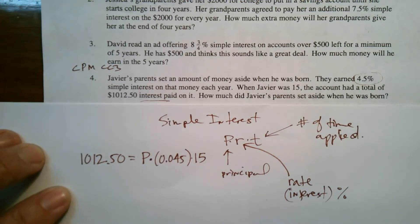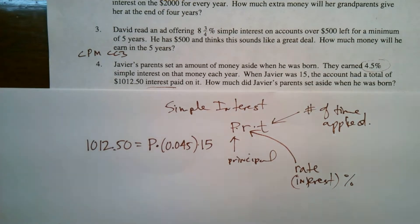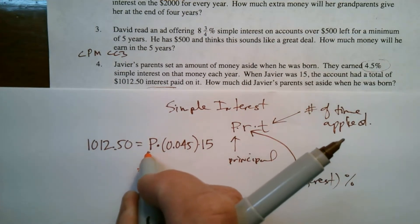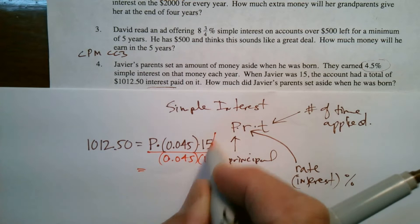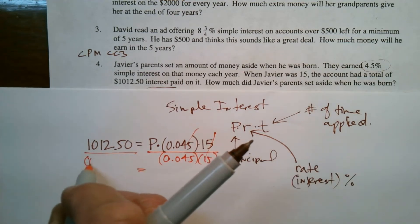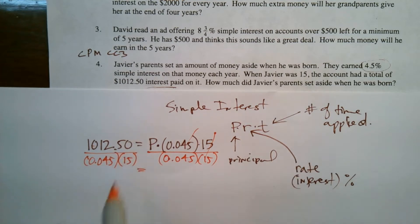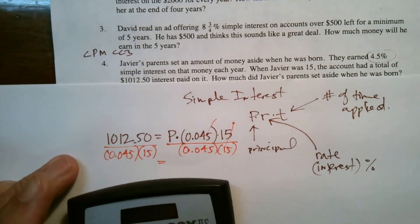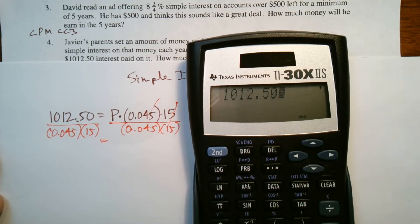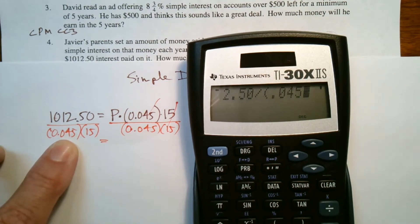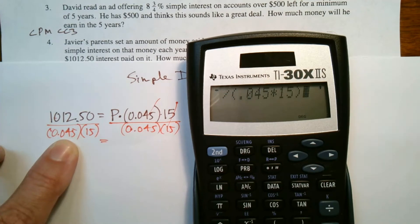So that's the equation I solved. So really what I'm going to do is to get this P, to figure out what that principle is, I'm going to divide both sides by this 0.045 times 15. So I have to take that number and divide by 0.045 and by 15. So that of course we would do with a calculator. So let me get that going here.